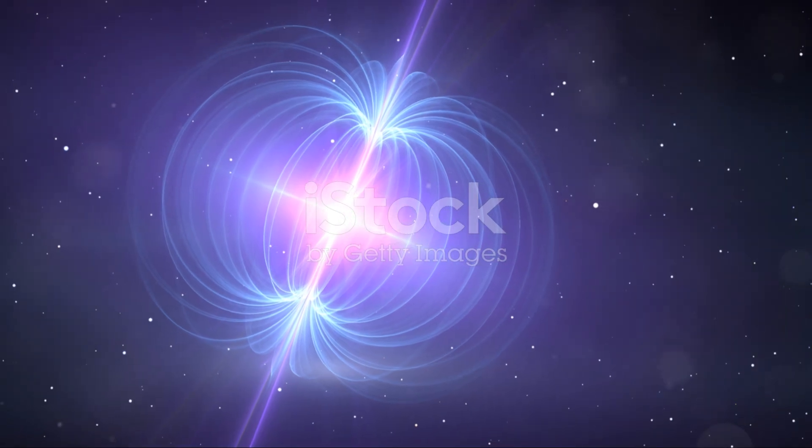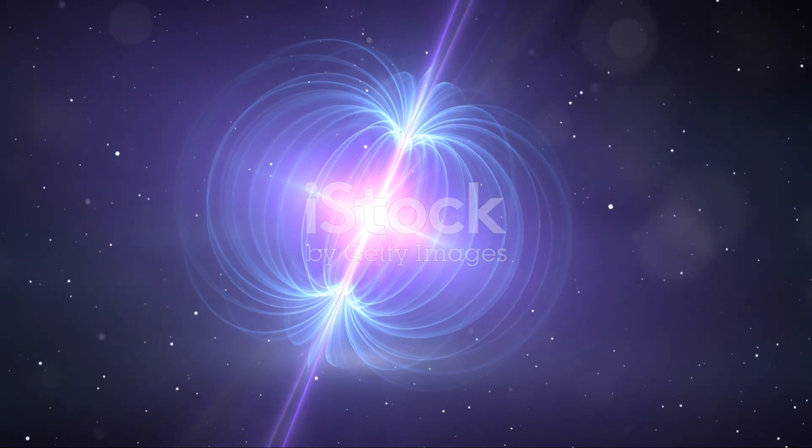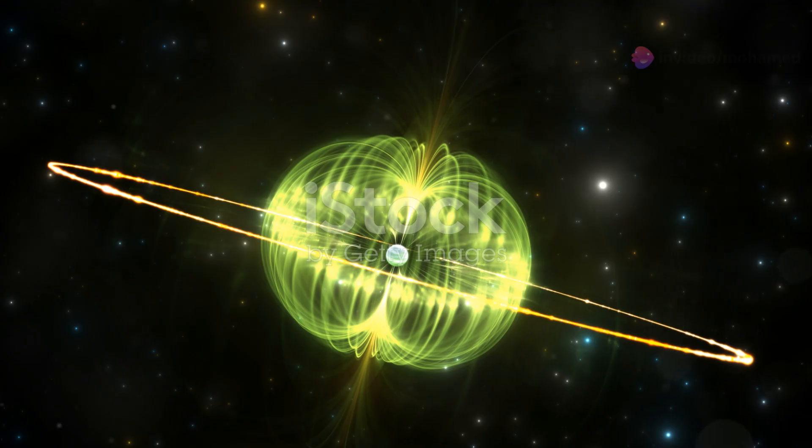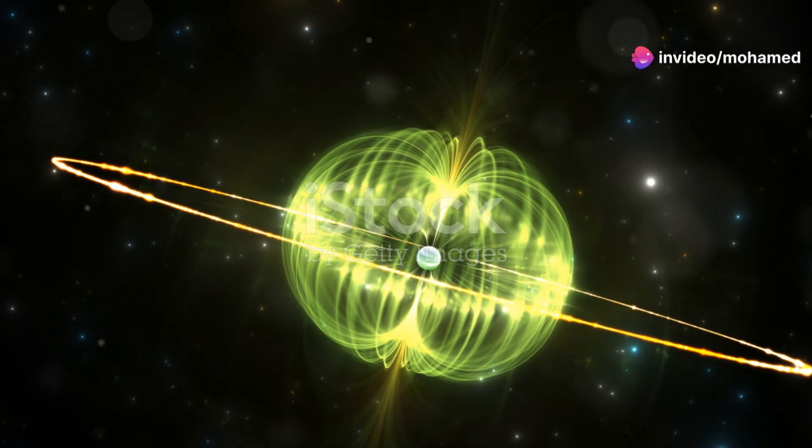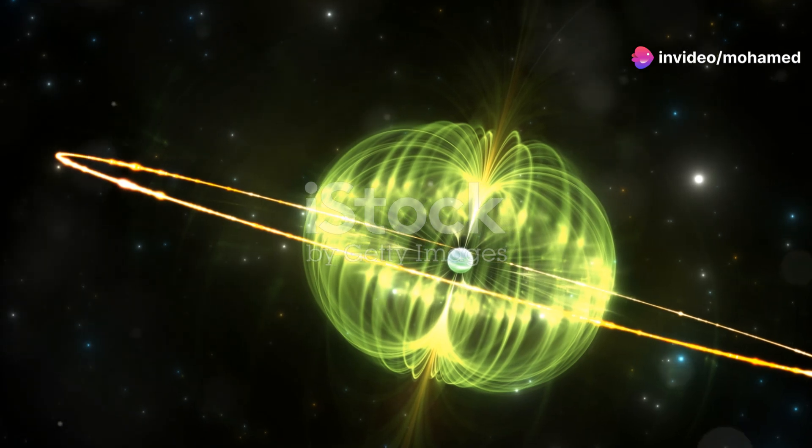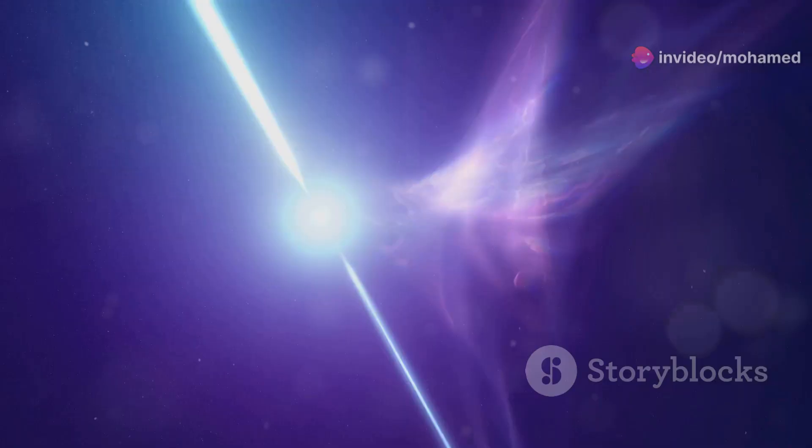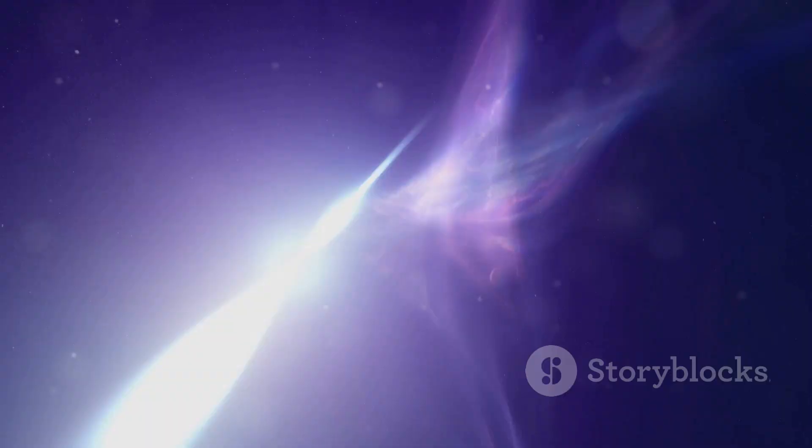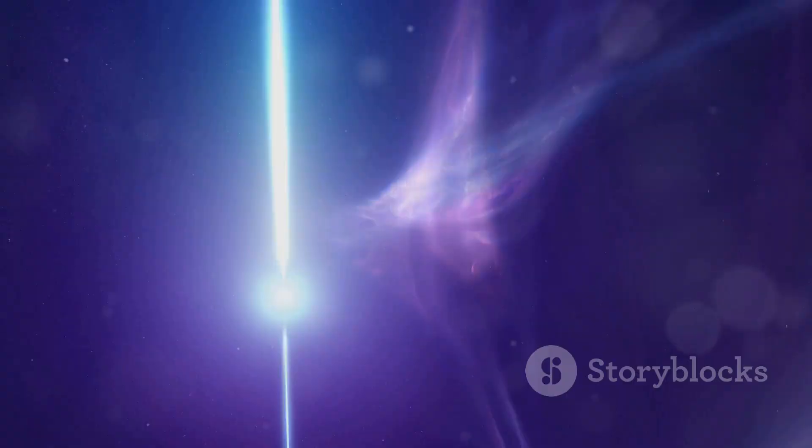To grasp the density of a neutron star, imagine compressing the entire human population into a sugar cube. A single cubic centimeter of neutron star material would weigh about 400 million tons. This incredible density means that neutron stars have extremely strong gravitational fields and magnetic forces.